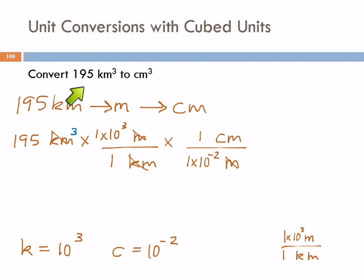This cube applies to the unit. It doesn't apply to the number. This original number is 195 cubic kilometers. In here, though, if I want cubic kilometers in the bottom, I have to raise the whole conversion factor to the power of 3. And over here, I need to cube the entire conversion factor.